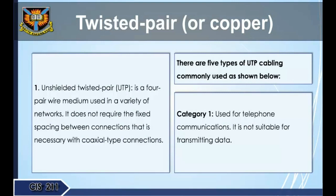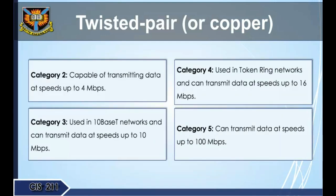Twisted pair: Unshielded twisted pair (UTP) is a four-pair wire medium that does not require the fixed spacing between connections necessary with coaxial connections. There are five categories of UTP cabling: Category 1 is used for telephone communications and is not suitable for transmitting data. Category 2 can transmit data at speeds up to 4 Mbps. Category 3 is used in 10Base-T networks and can transmit data at up to 10 Mbps. Category 4 is used in Token Ring networks and can transmit data at up to 16 Mbps.